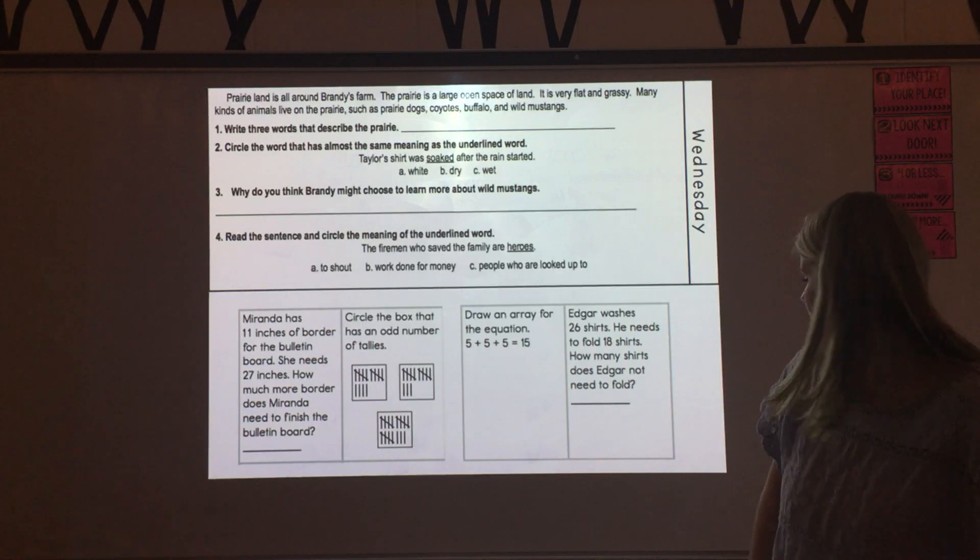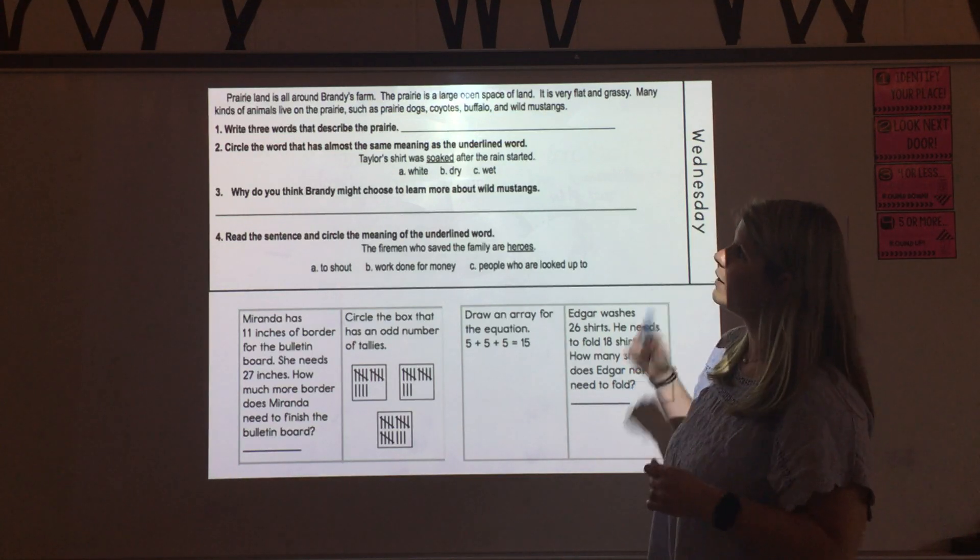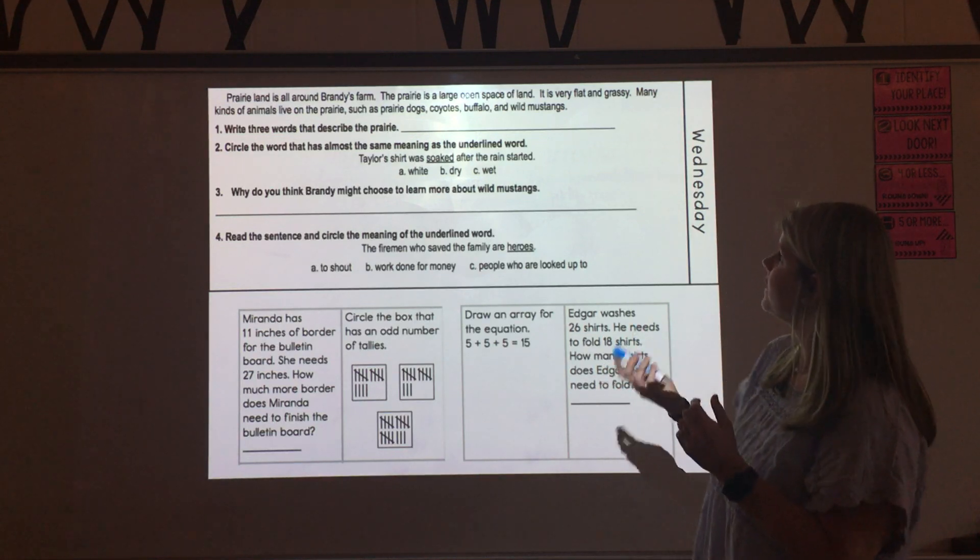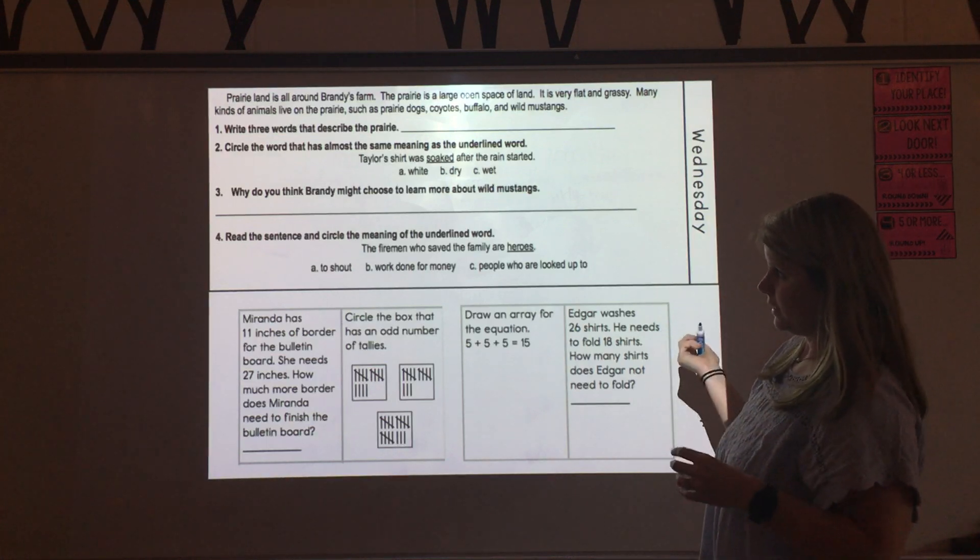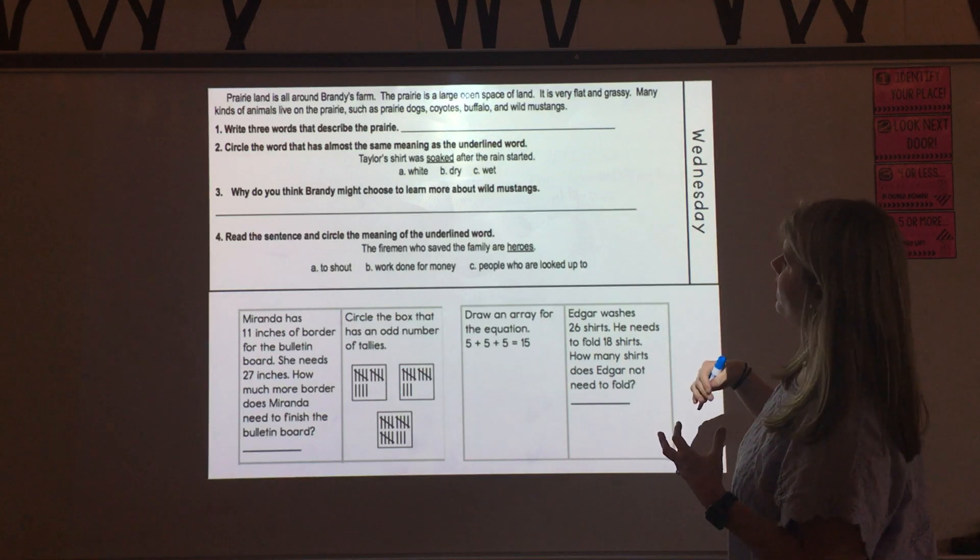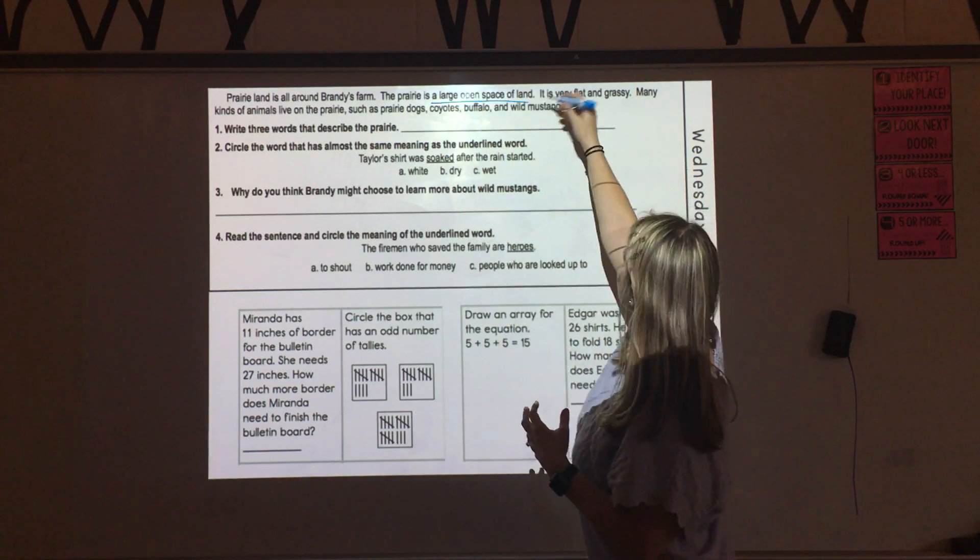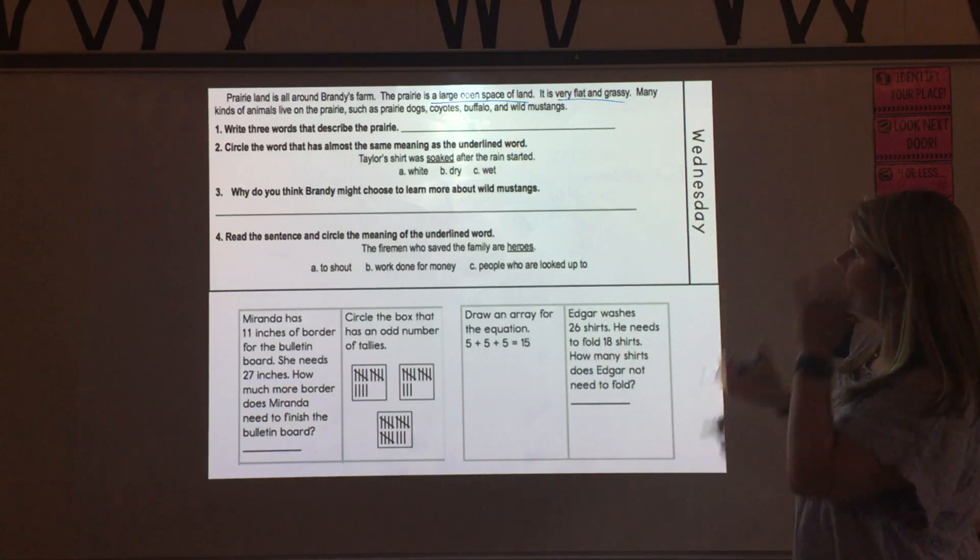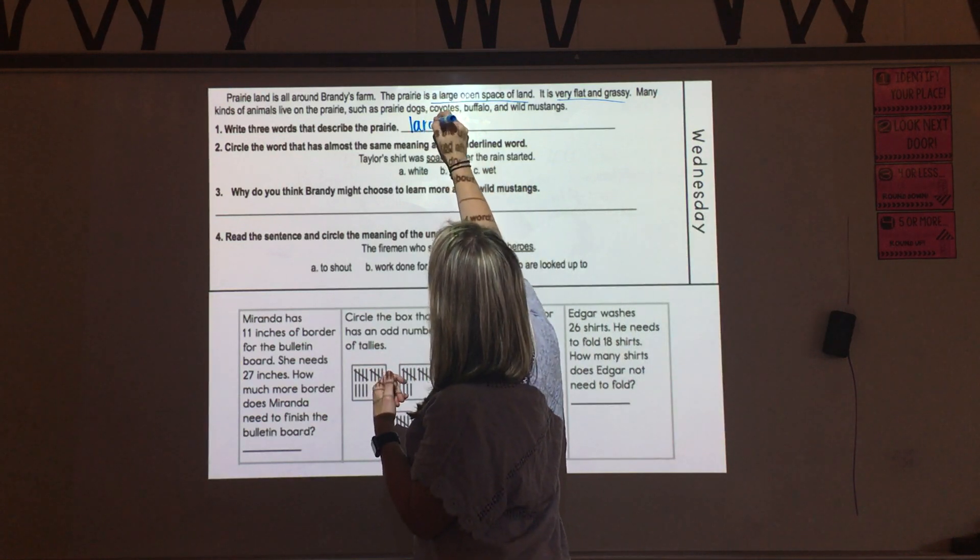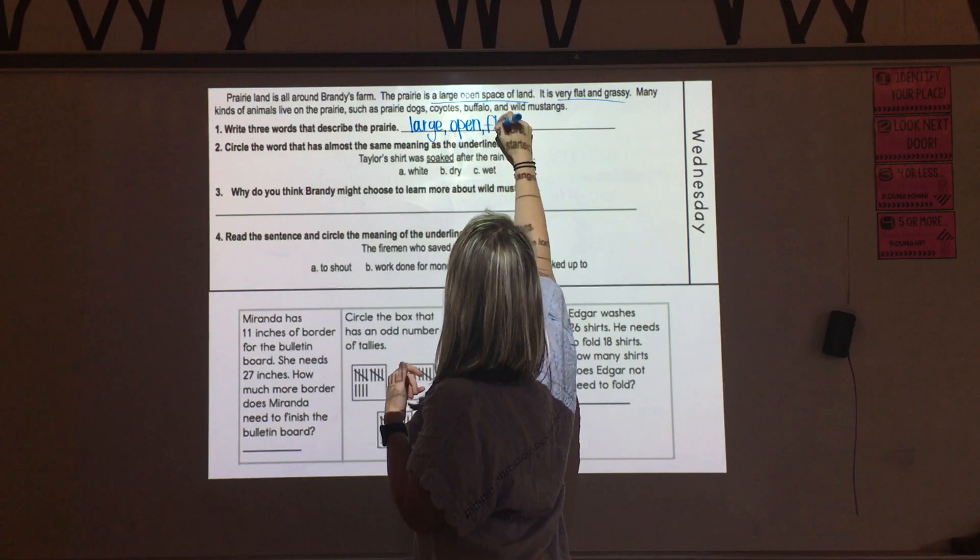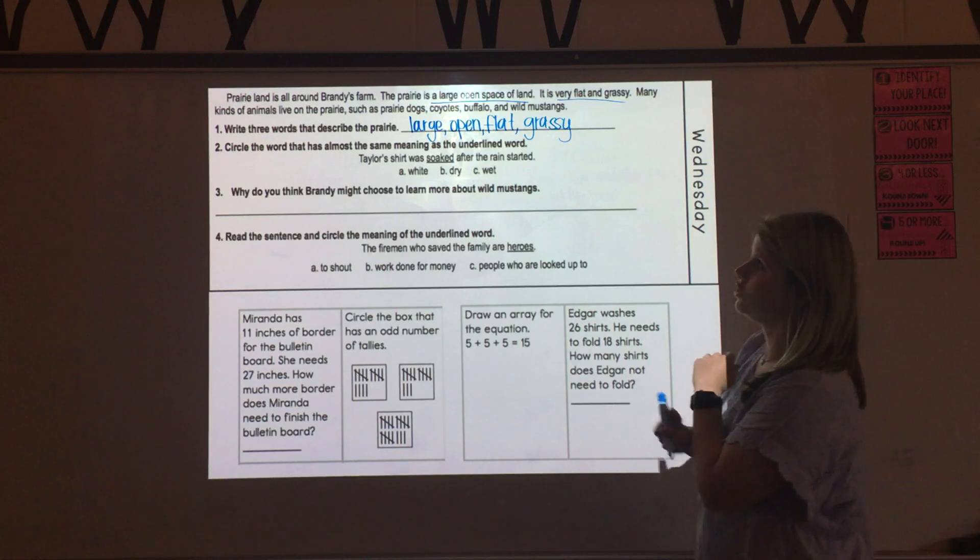So looking at our morning work here, continuing with the passage Life in the Midwest, we see on Wednesday: prairie land is all around Brandy's farm. The prairie is a large open space of land. It's very flat and grassy. Many kinds of animals live on the prairie, such as prairie dogs, coyotes, buffalo, and wild mustangs. Number one is asking us to write three words that would describe this prairie. So if we go back in our story, we see that the prairie is a large open space of land. This sentence is describing it as very flat and grassy. A lot of animals live there. So I'm going to list more than three, and some that stand out to me. It would be large, open, flat, and grassy. So those are a few adjectives or describing words you could choose from to describe the prairie here.